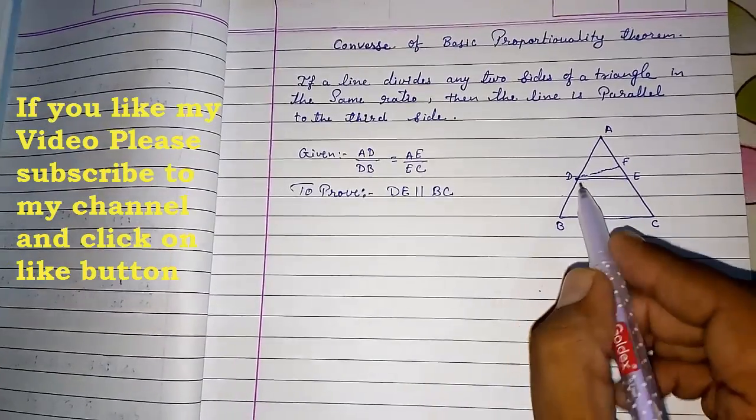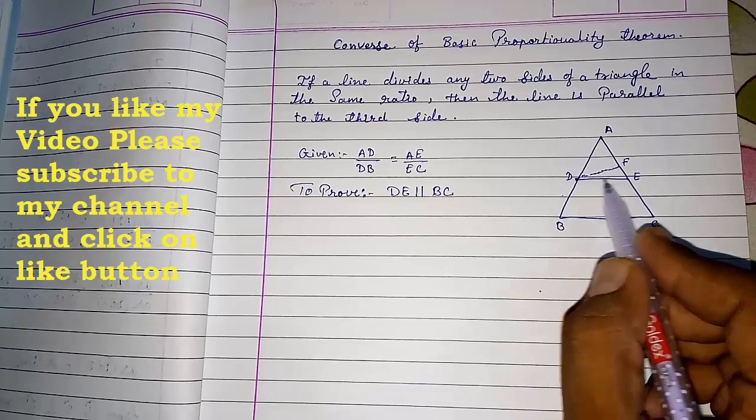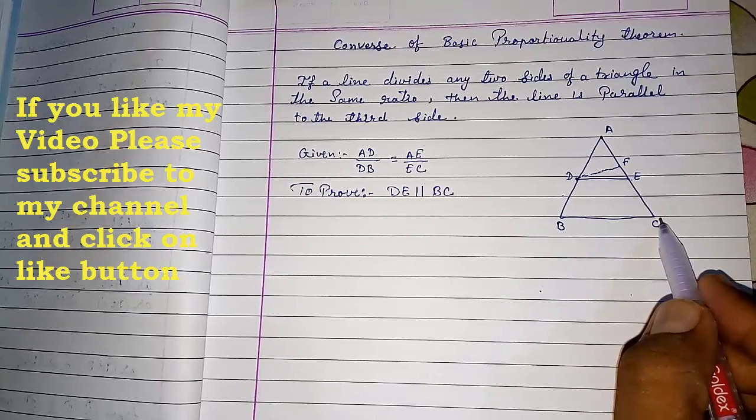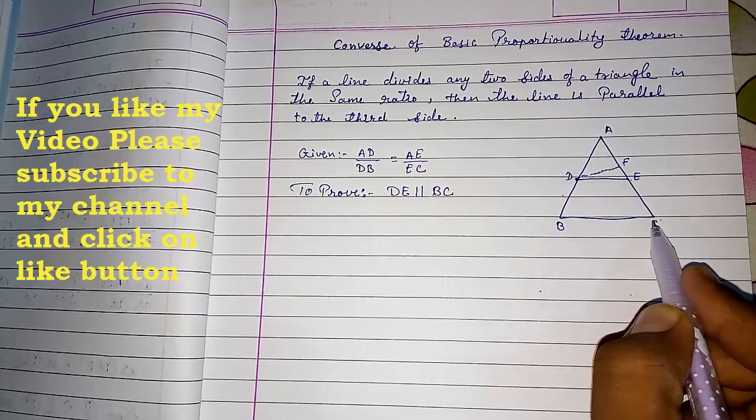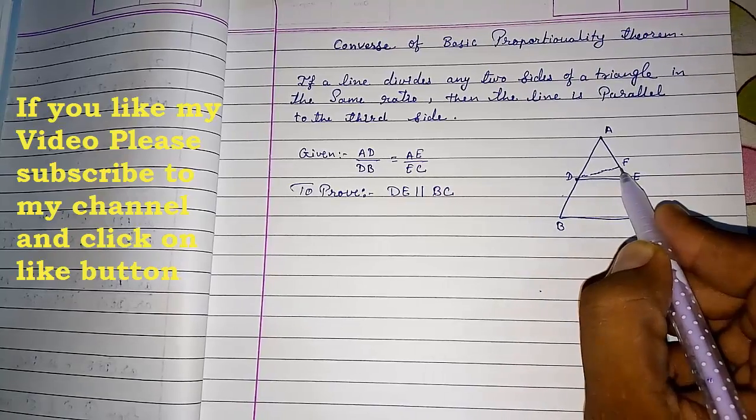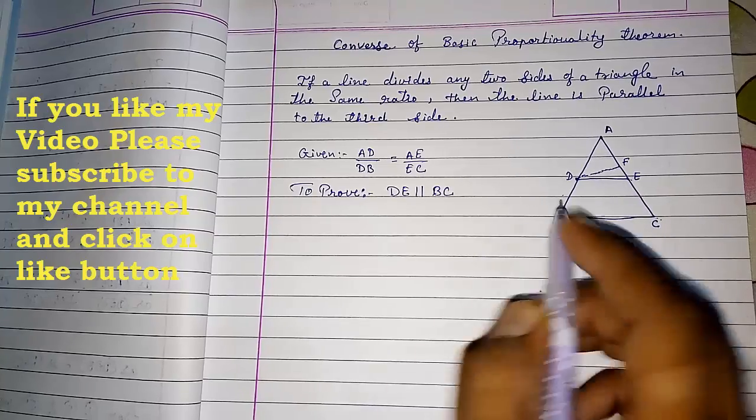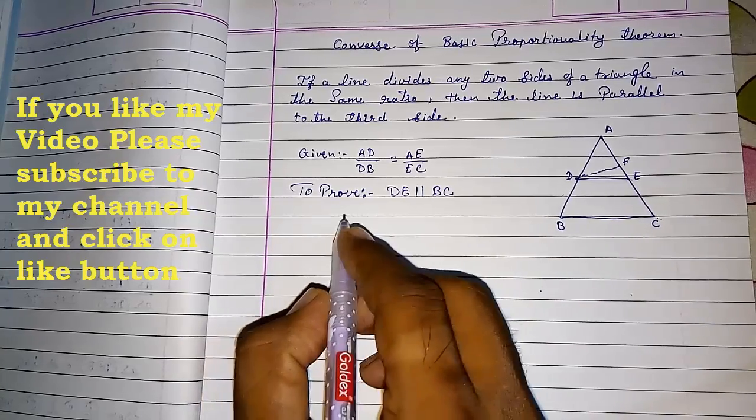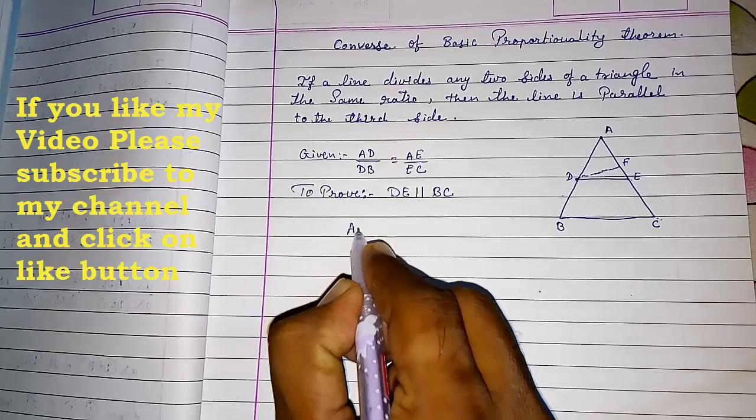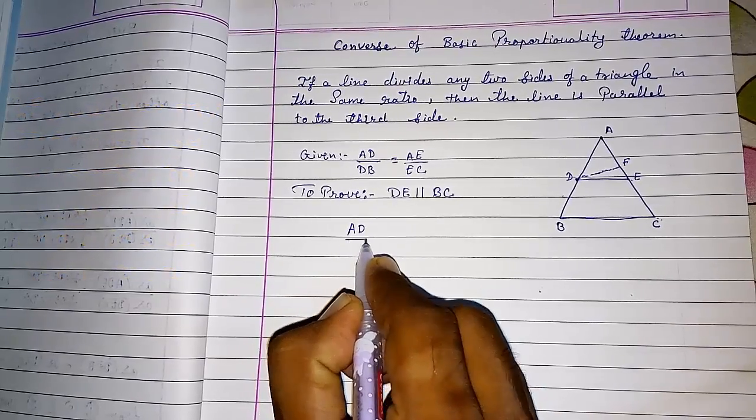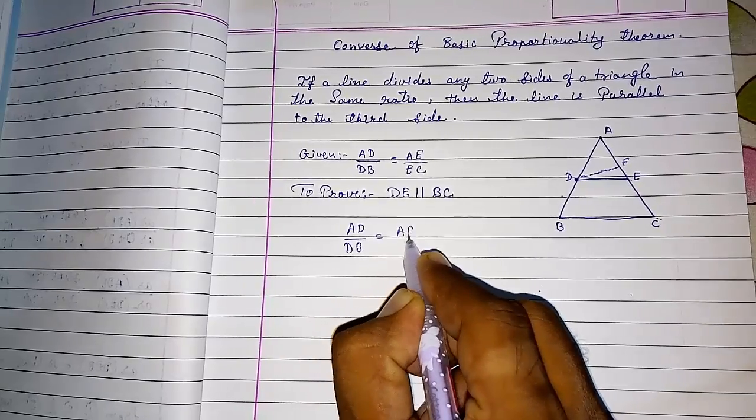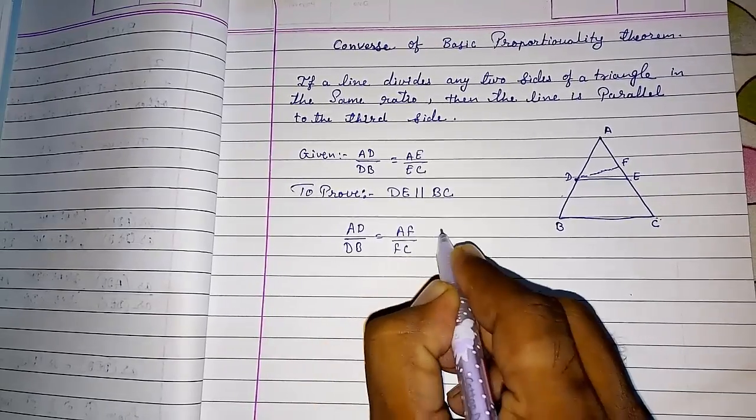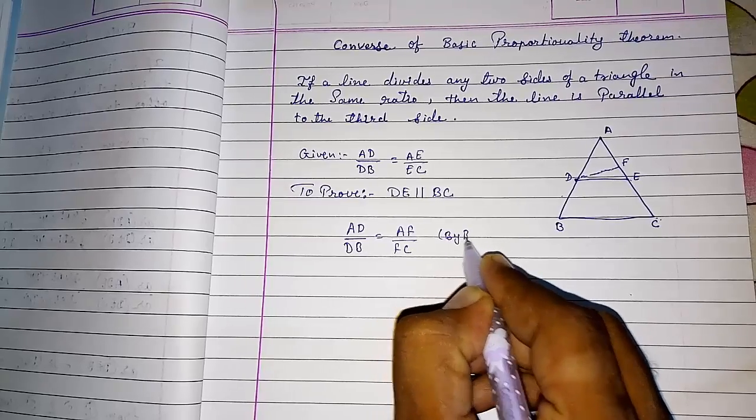Now, again I am telling that we have to suppose that DE is not parallel to BC. Now if DF is parallel to BC, what we can say? We can say AD by DB is equal to AF by FC by basic proportionality theorem.